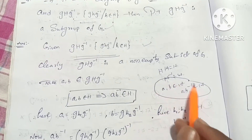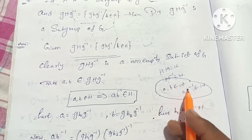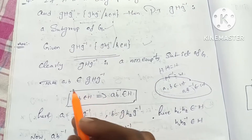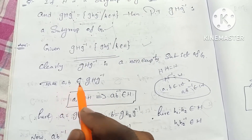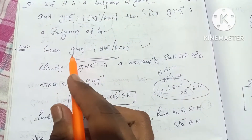We will prove this subgroup condition. Let A and B belong to gHg⁻¹. In place of H, we will prove this value.